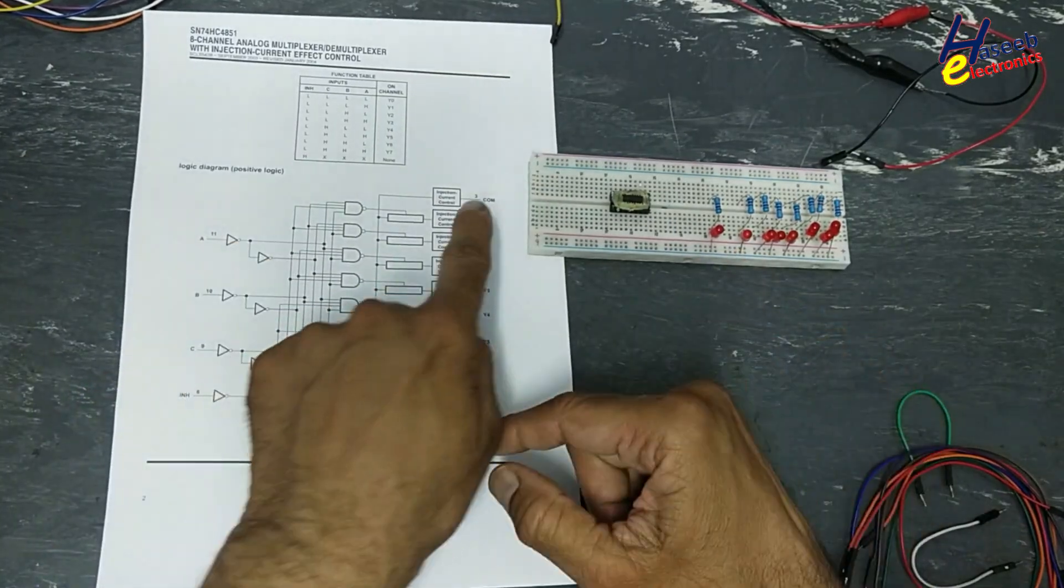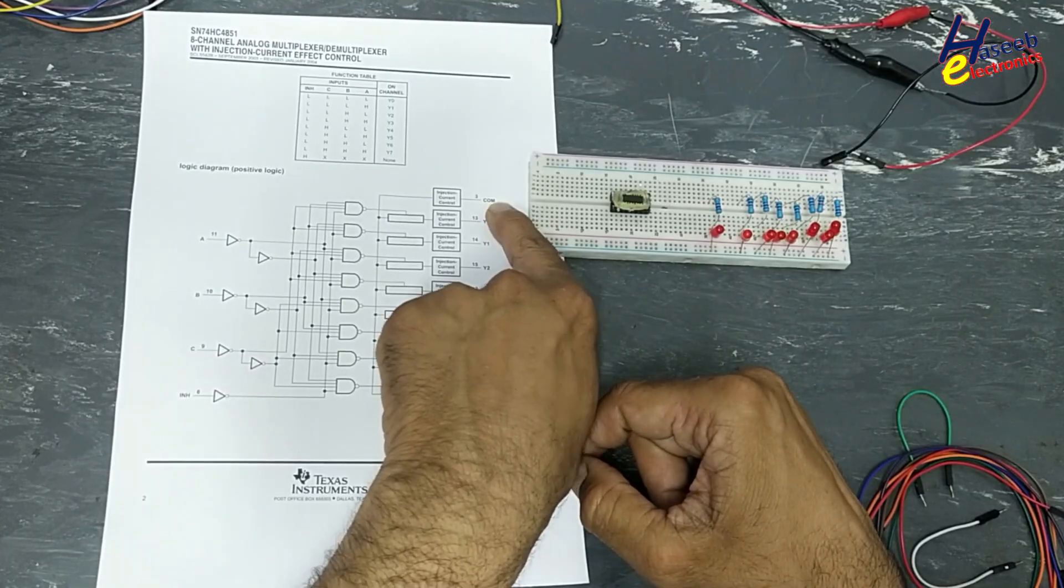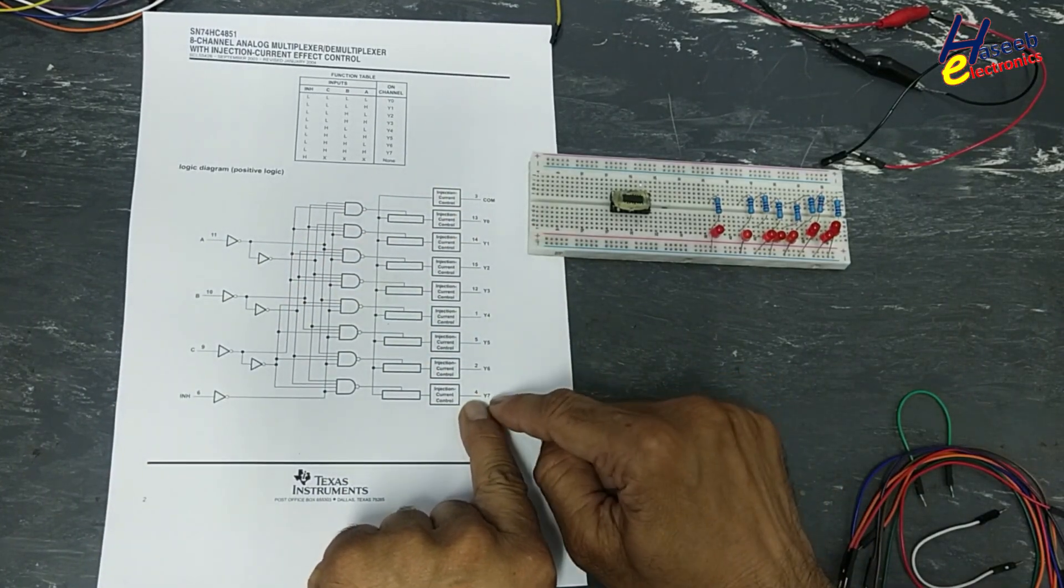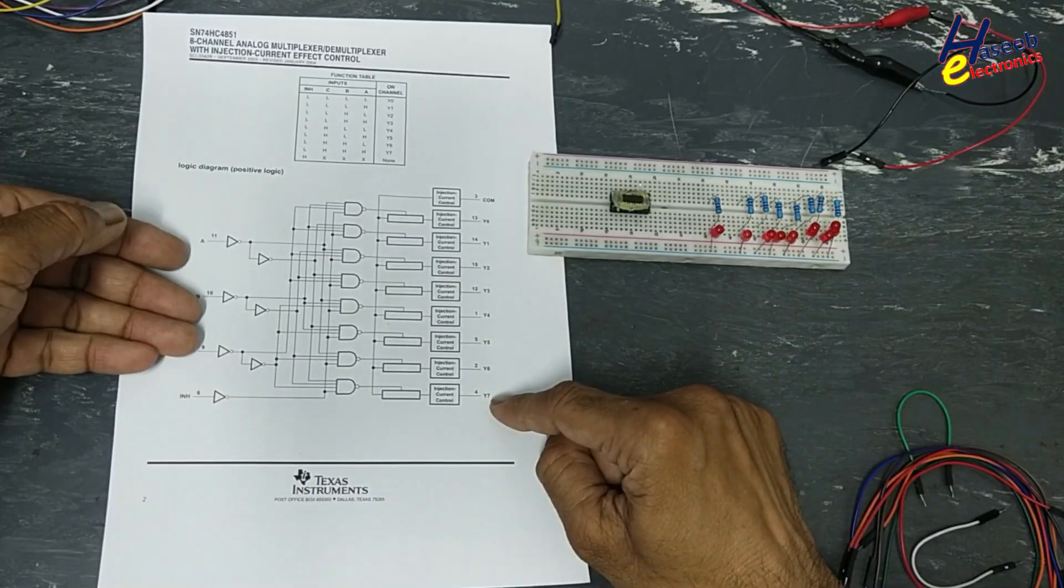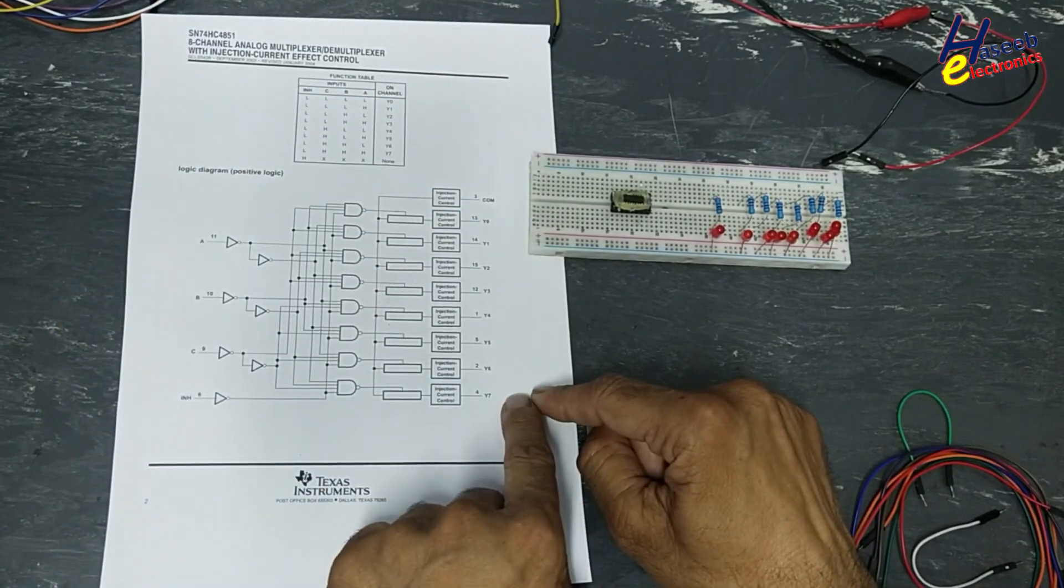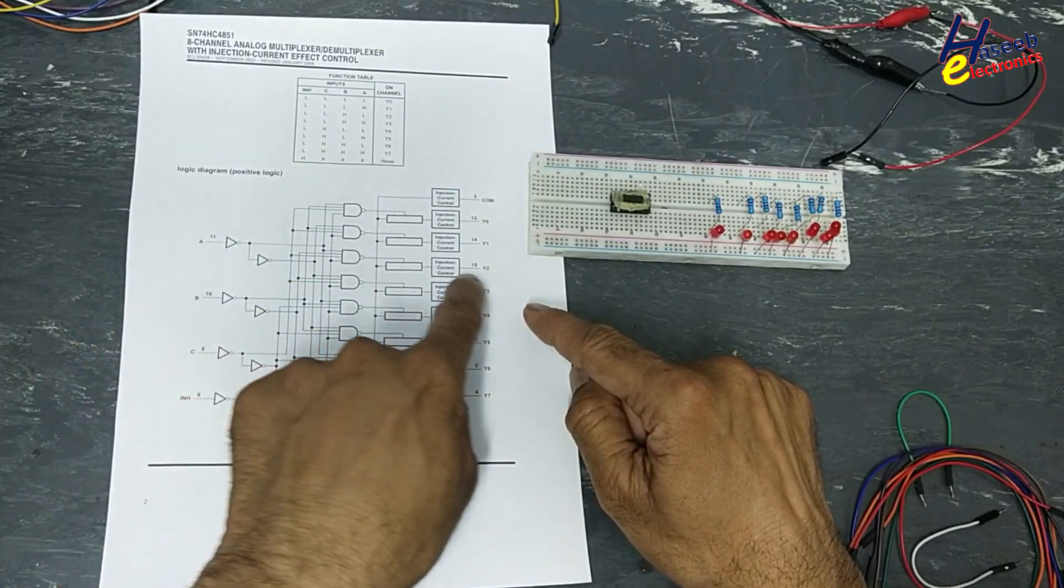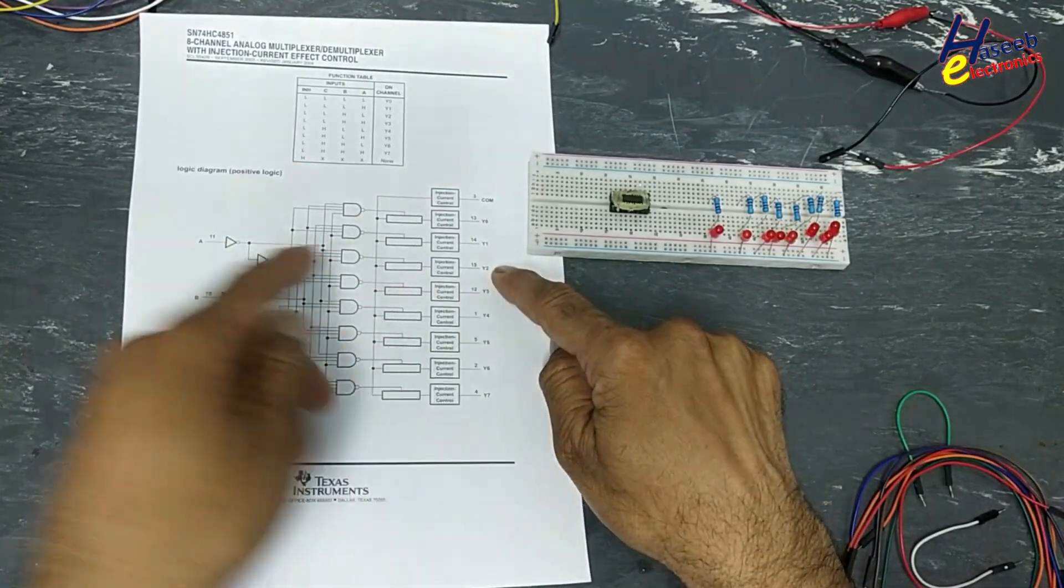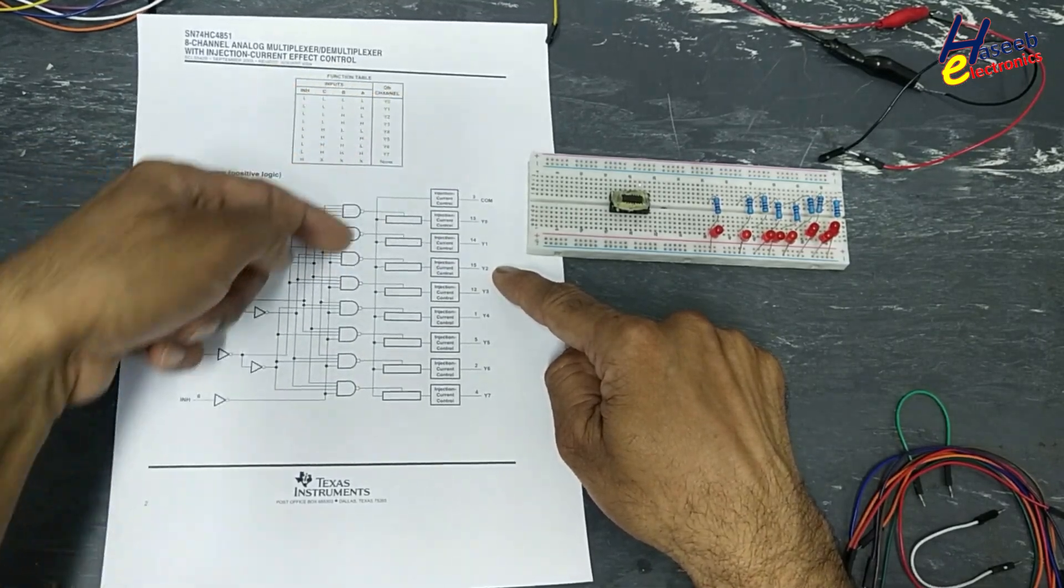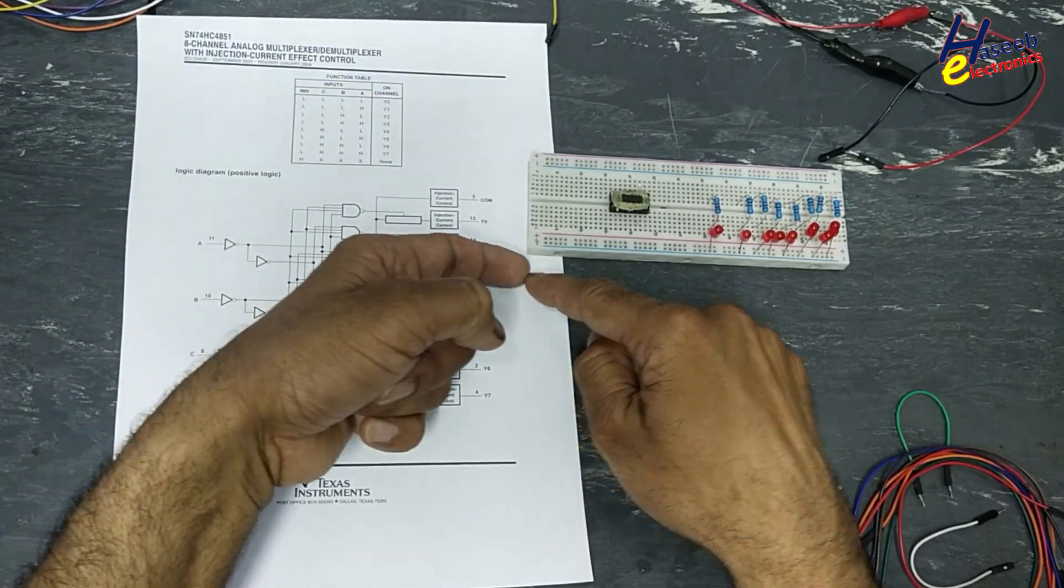Let's suppose this signal that is at common pin, pin number three, we want to send to pin number four, Y7 output. The address will select that pin and this signal will reach here. If we want to send to Y2, pin number 15, this portion will be selected and the signal will go from here.